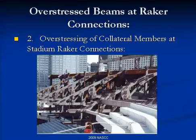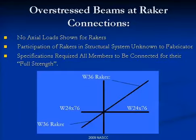Moving to the next category: overstressing of collateral members. My example pertains to a stadium, but this applies to any structure. Here's what it shows on the design drawings: a raker that frames through a joint, some beams, and a column. The specification on the job stated all members are to be connected for their full strength. So what does that mean — full shear strength? Full uniform design load capacity? A combination of flexural and axial? Some minor axis bending or torsion?